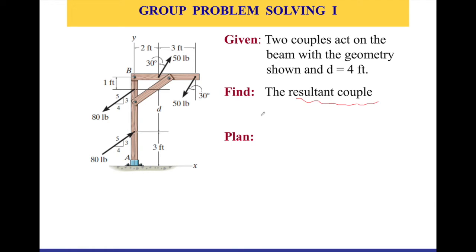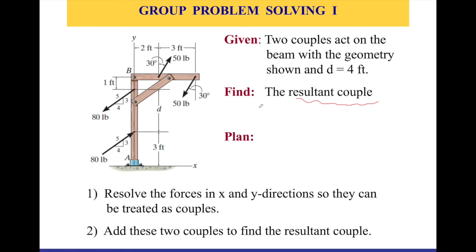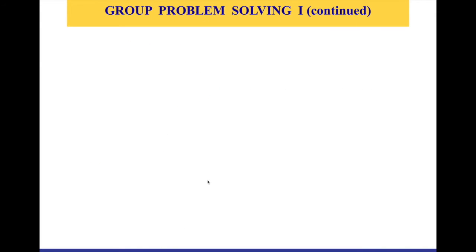These two couples act on this beam with the geometry shown and we would like to find the resultant couple. If you remember from the previous video, our couples are free vectors, so we can use vector analysis to add them together. Our plan in solving this problem will be: First, we need to resolve the forces in x and y direction, this is a two-dimension problem, so that they can be treated as couples, because we would like to find the distance that is perpendicular between the forces. And then we're going to add these couples to find the resultant couple.